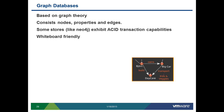The other variety of databases are graph databases, which are based on graph theory. They consist of nodes, and each node contains properties and edges connecting to other nodes. Some stores like Neo4j even exhibit ACID transaction capabilities like RDBMS. One of the primary arguments for NoSQL graph databases is that they are whiteboard-friendly — you can write your concept on the whiteboard as a graph and create the same schema in a NoSQL graph database.